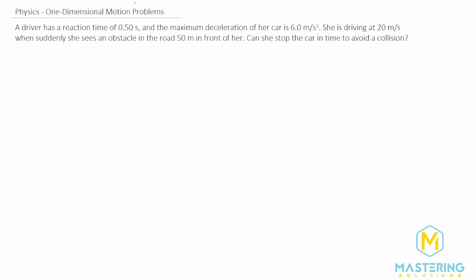Welcome to Mastering Solutions. This problem tells us that we have a driver with a reaction time of half of a second, and the maximum deceleration of a car is 6 meters per second squared. She's driving at 20 meters per second when she sees something in the road 50 meters in front of her and she slams on the brake. Can she stop in time?